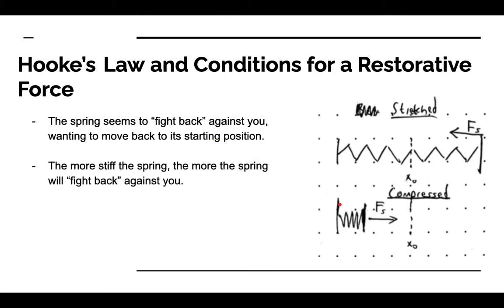There are different levels of stiffness for different springs. For example, the springs in a ballpoint pen are a lot less stiff than the springs that make up the suspension system of a car. If your spring is more stiff, the more it will fight back against you. It's a lot easier to stretch out a spring from a ballpoint pen than from a suspension system because of stiffness — the more stiff the spring, the more it will fight back.